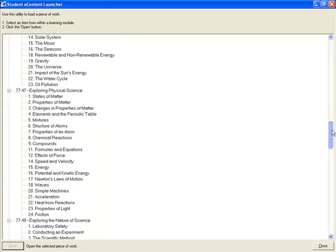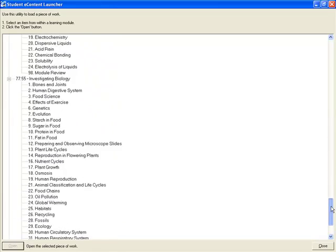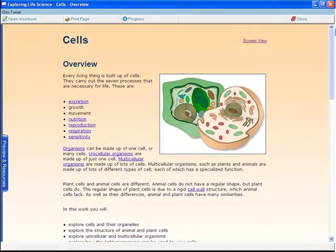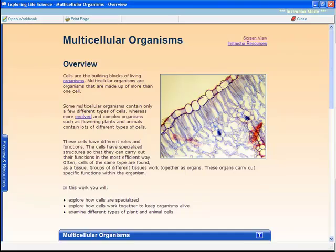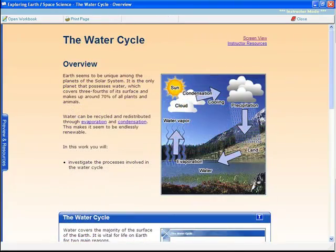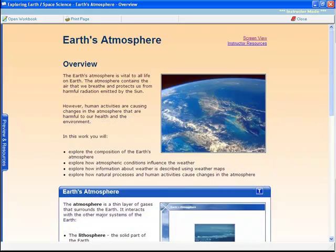There are more than 150 science topics across key stages 3 and 4, AS and A2 levels. These can be purchased on a topic-by-topic basis or sequenced to form a complete program of study.